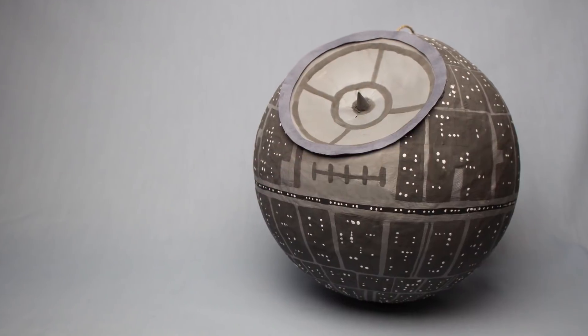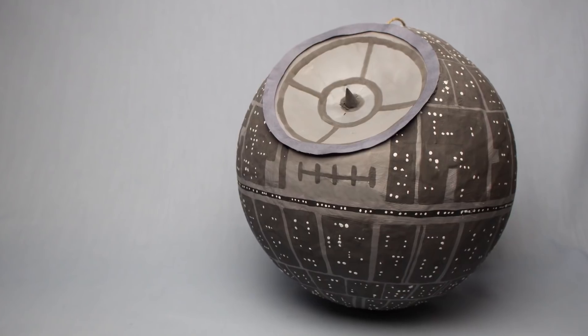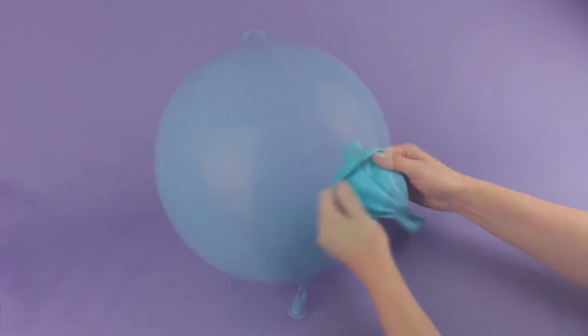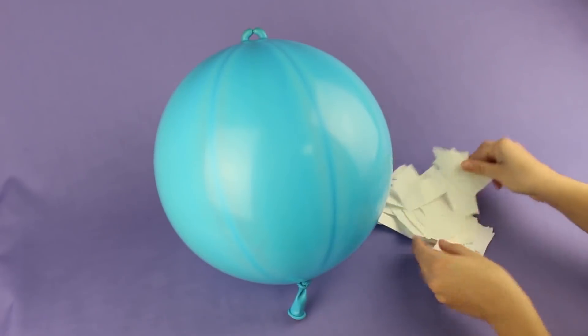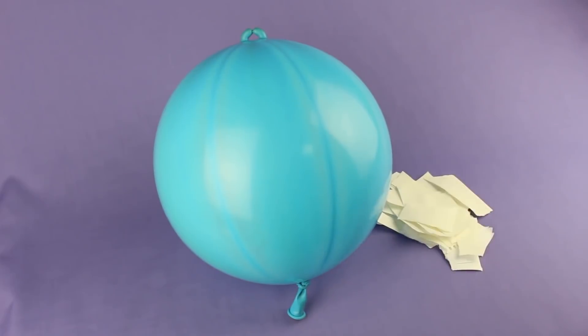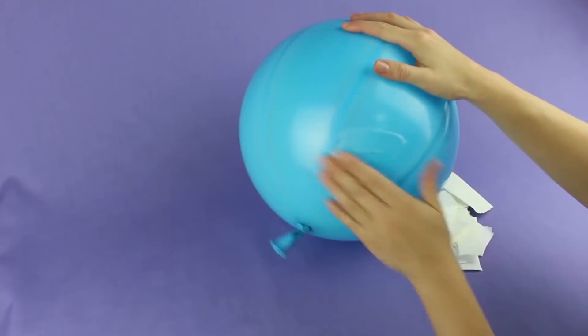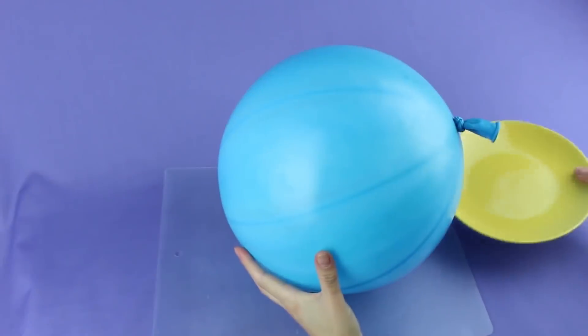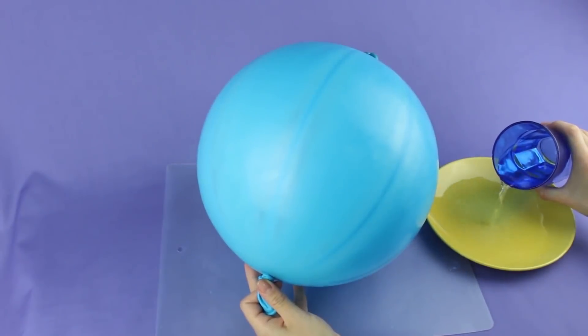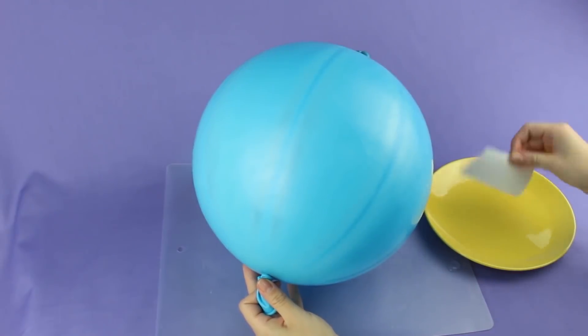Our tutorial is about how to make a Death Star pinata from the legendary Star Wars. We need a big round balloon to start with. Stretch it. Inflate the balloon. Prepare the paper. Tear it into small strips. Take any fatty cream and spread it on the balloon. We need a bowl. Pour water. Soak the paper and coat the surface.